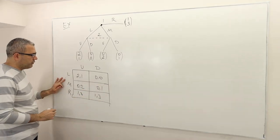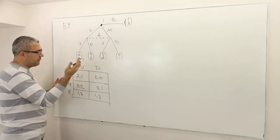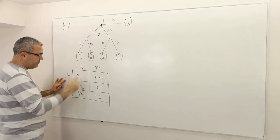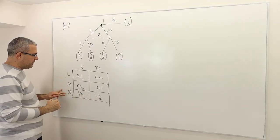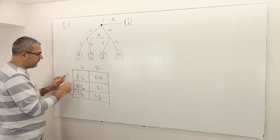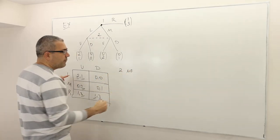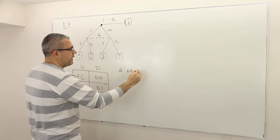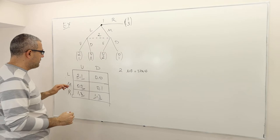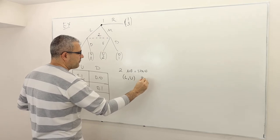So what are the Nash equilibria? Well, this is not an incomplete information game, so therefore there's no Bayesian Nash — it's just Nash. U is a best response here, U is a best response here, both U and D are best responses here. Given player two plays U, the best response is L, and here the best response is R. So there are two Nash equilibria: the first one is (L, U) and the second one is (R, D).